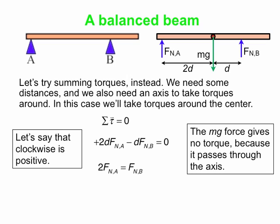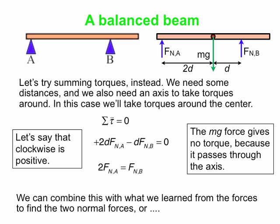This torque result alone doesn't give us the individual forces, but combined with the force equation, we can solve. We have two numbers where one is twice the other and they collectively add up to 12 newtons. We can also try taking torques around a completely different point to verify — a good rule of thumb is to choose an axis where one or more unknown forces pass through.